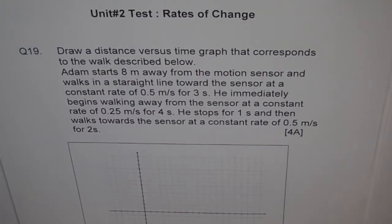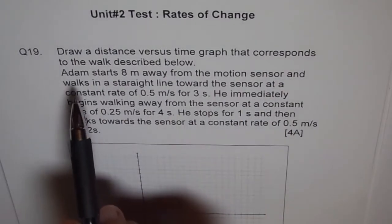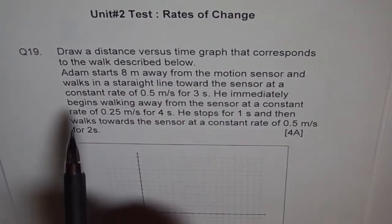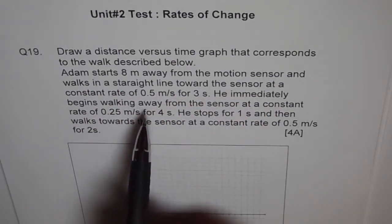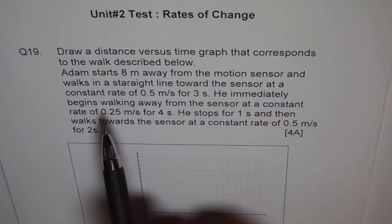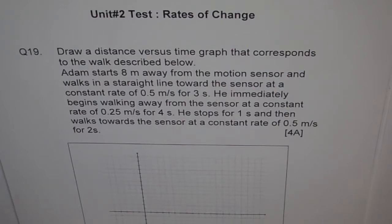Question 19 is an application problem from unit 2, rates of change. The question says: draw a distance versus time graph that corresponds to the walk described below. Adam starts 8 meters away from the motion sensor and walks in a straight line towards the sensor at a constant rate of 0.5 meters per second for 3 seconds. He immediately begins walking away from the sensor at a constant rate of 0.25 meters per second for 4 seconds. He stops for 1 second and then walks towards the sensor at a constant rate of 0.5 meters per second for 2 seconds.